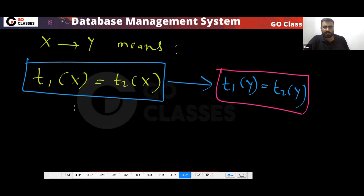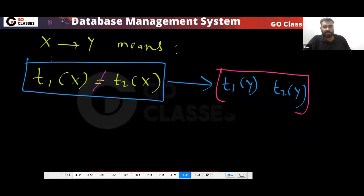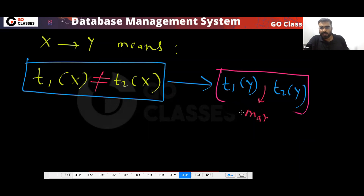If two tuples have different values of X, then we don't care. T1[Y] may or may not be equal to T2[Y] — in this situation, we don't care.